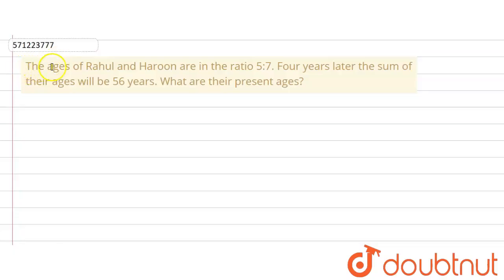The given question says that the ages of Rahul and Harun are in the ratio 5 ratio 7. Four years later the sum of their ages will be 56 years. The sum after 4 years is given which is 56 years. What are their present ages?